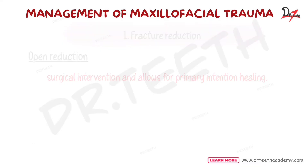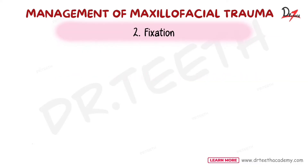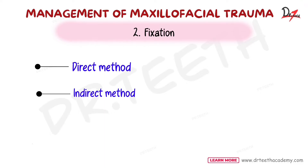The second step is fixation. In the first step we reduce the fragment — we brought it back to position — but since we have a fracture, we need to fix those fragments together. That fixing procedure is known as fixation. The fractured fragments are fixed by direct and indirect methods.